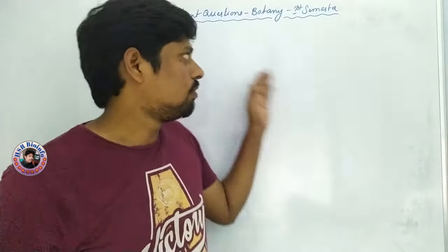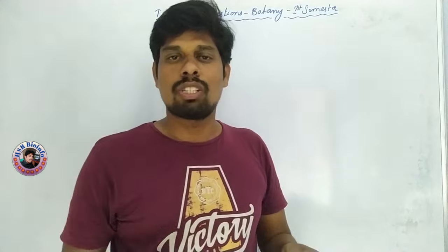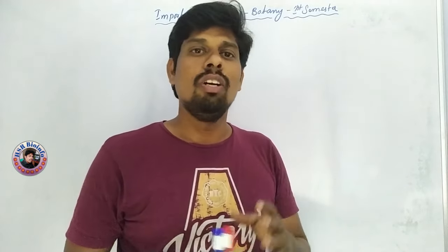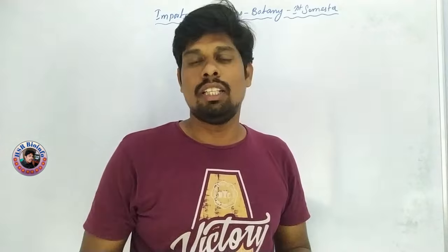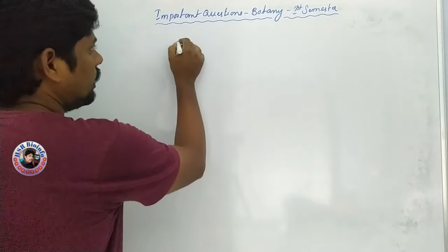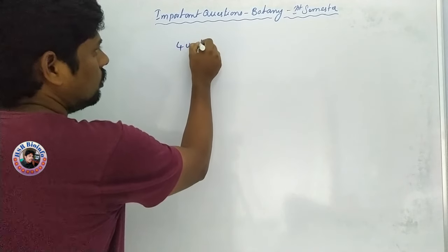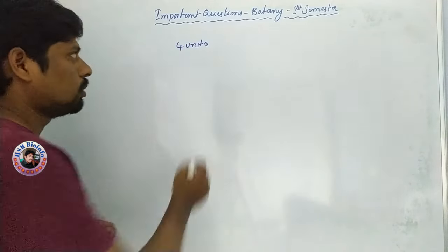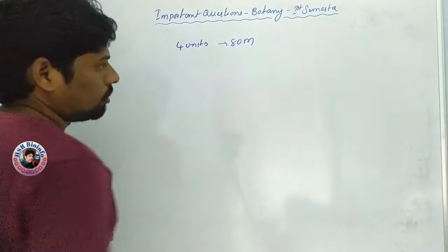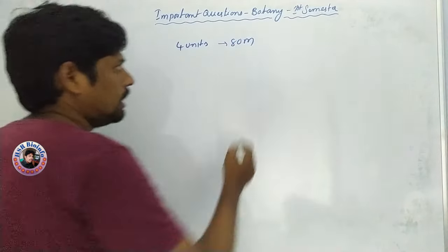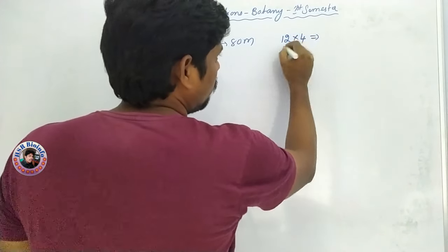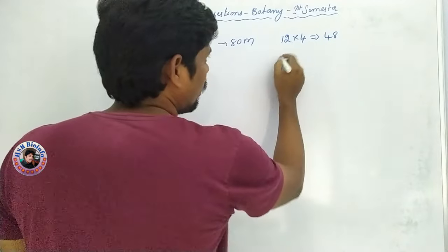First, we have the syllabus pattern and exam pattern. The most important pattern is 80 marks. Once the pattern is 80 marks, you will see how many questions there are. If you have 4 units, it will be 18 marks for four-mark questions.